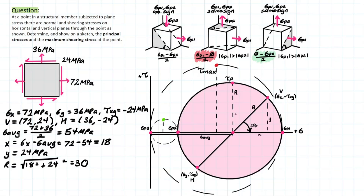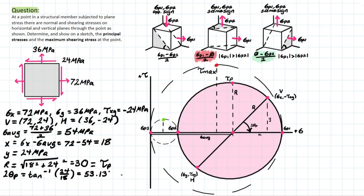The max in-plane shear stress is equal to this radius, which is 30 MPa. Next, we can determine 2θp, the principal angle multiplied by 2, which gives us the orientation of the element for the principal plane's location. That equals arctan of the opposite over adjacent, so 24 over 18, which gives us 53.13 degrees, acting in the clockwise direction. Thus, theta p on its own is 53.13 divided by 2, giving us 26.57 degrees.